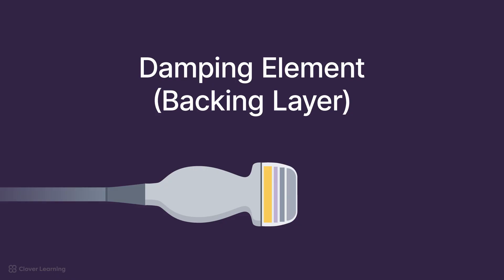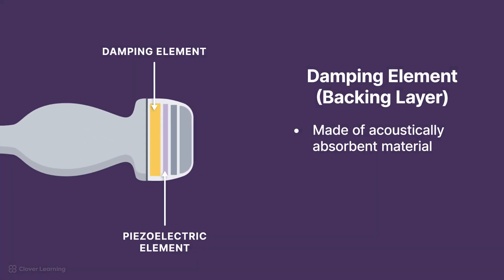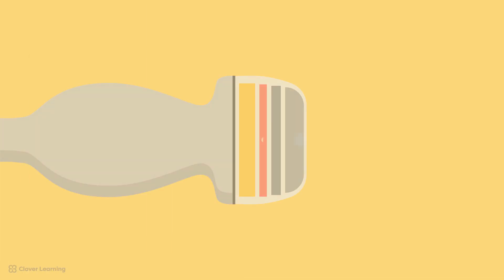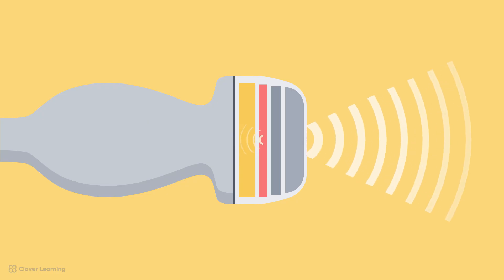Now we will discuss the damping element or backing layer, which is located towards the back of the transducer behind the crystal. It is made of acoustically absorbent material, such as epoxy resin infused with heavy particles like tungsten or lead, or other composites specifically engineered for high acoustic attenuation. Its job is to absorb stray vibrations, preventing echoes from lingering. The damping element works to absorb vibrations that can persist beyond the initial pulse and create what are called ringing effects.